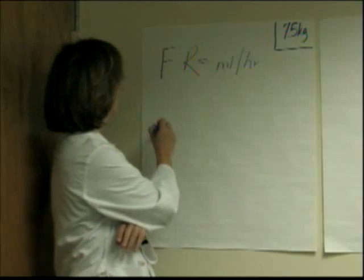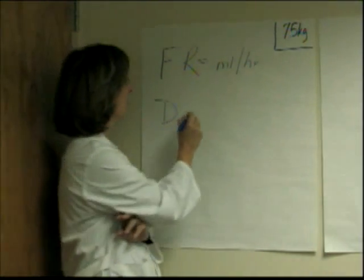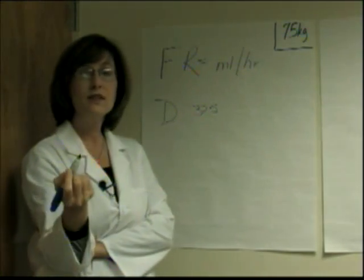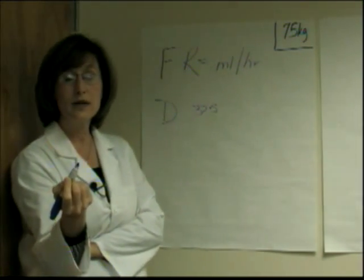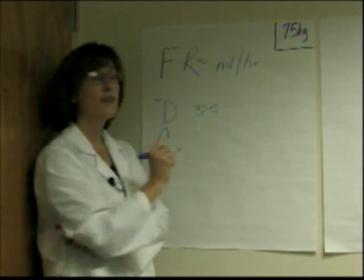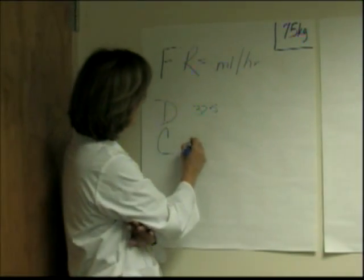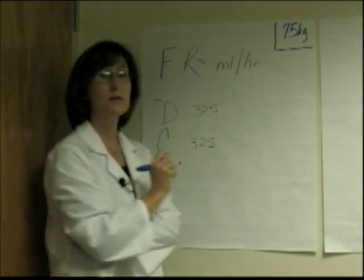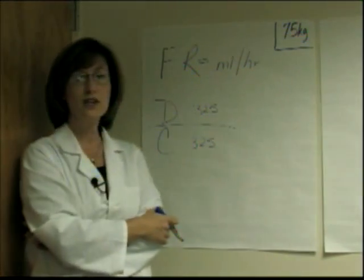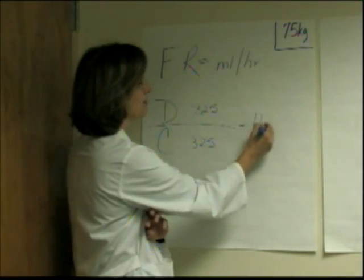If you have a dose — which we'll abbreviate D — of Tylenol of 325 milligrams ordered, then you also need to know the strength of the tablets you have on hand, which we'll call concentration. Tylenol comes in 325 milligram tablets. If you just put dose over concentration and divide the two, you'll see that you should give one tablet.